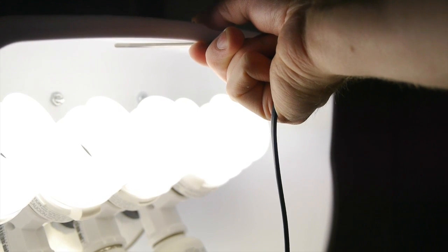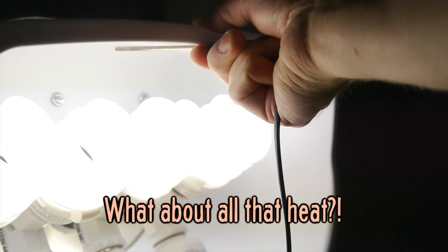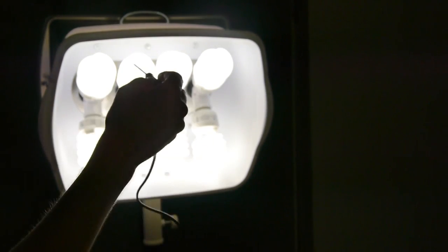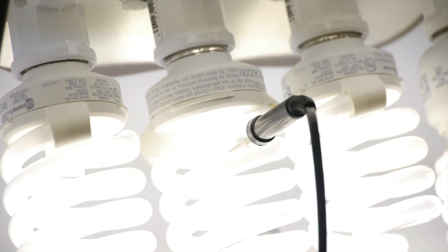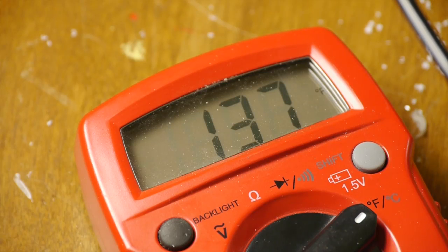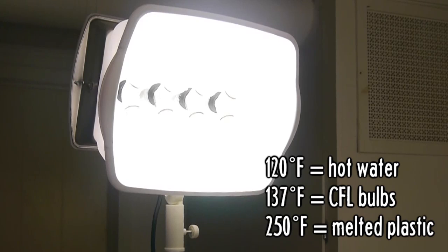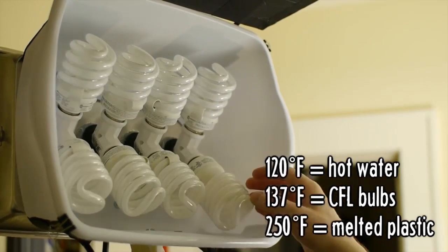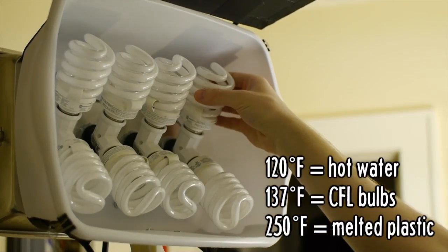But is anyone wondering if all these light bulbs will melt the plastic pan? I worried about that, so I measured the temperature of the bulbs, which at their hottest get to around 137 degrees Fahrenheit. Polypropylene plastic melts at about 250 degrees, so it's not a problem.